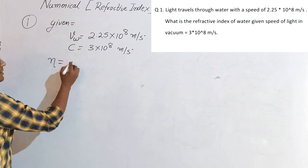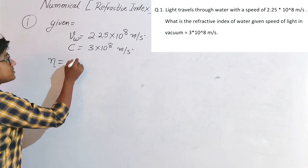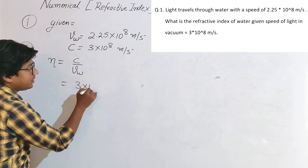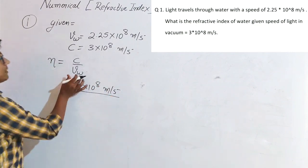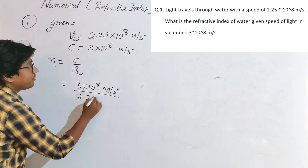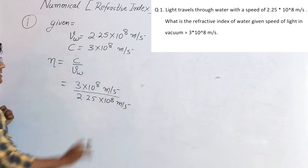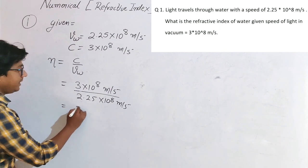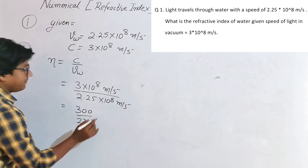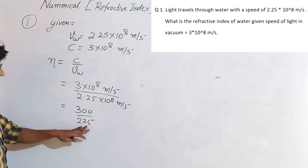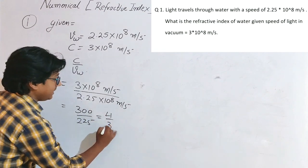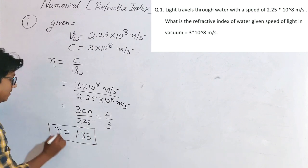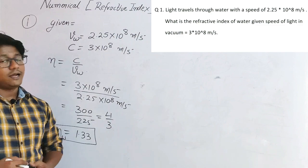The refractive index is the ratio of speed of light in vacuum upon speed of light in the medium, so n = C upon VW. Placing the values: 3 × 10⁸ upon 2.25 × 10⁸. The units and powers of 10 cancel, giving 3 upon 2.25, or equivalently 300 upon 225. This simplifies to 4 by 3, which equals 1.33. So the refractive index of water is 1.33.